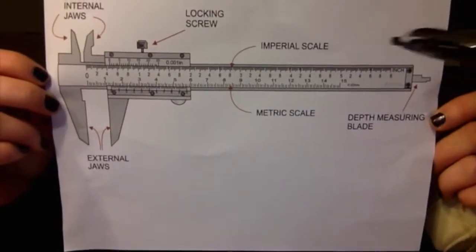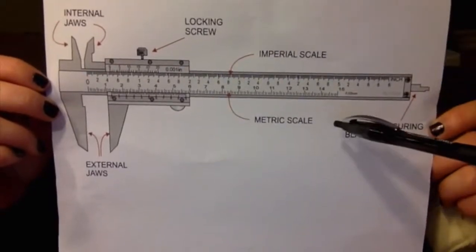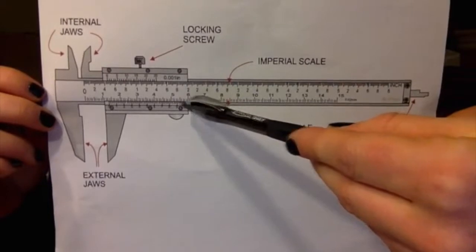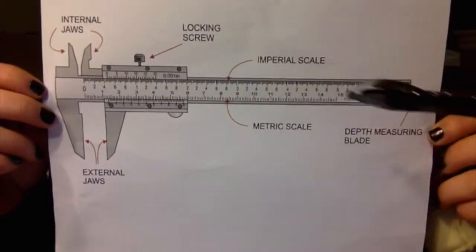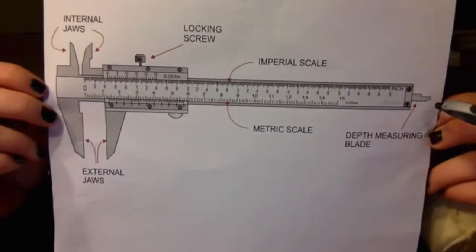For measuring objects, you want to avoid using the imperial scale, because that's used for measurement in inches. And you want to use the metric scale, which is measured in millimeters. This is the sliding scale you use to find the different measurements. And this is the depth measuring blade, which measures the depth of an object.